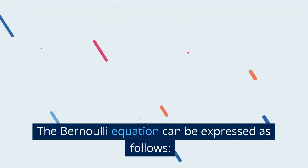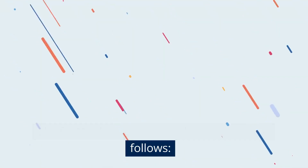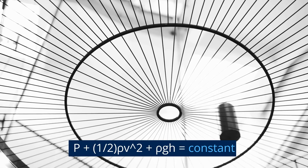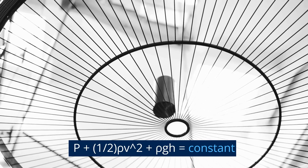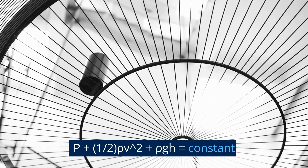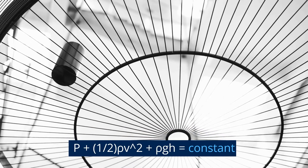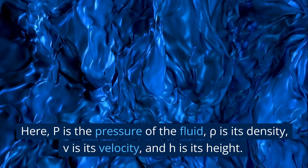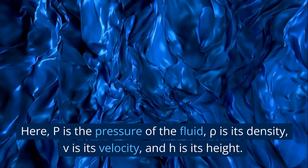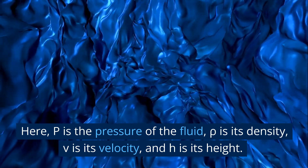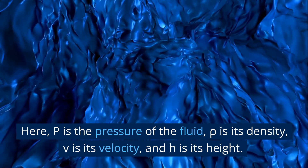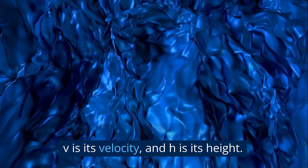The Bernoulli equation can be expressed as follows: P plus one-half rho v squared plus rho gh equals constant. Here, p is the pressure of the fluid, rho is its density, v is its velocity, and h is its height.